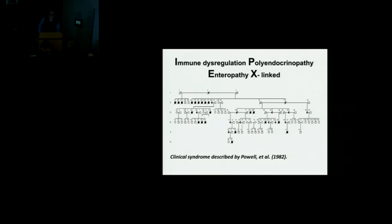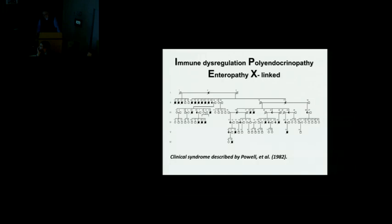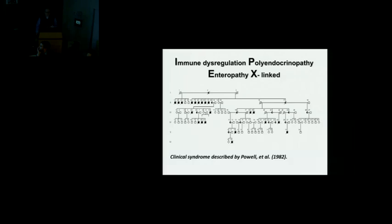The paradigm disease for immune dysregulation disorders is IPEX syndrome — the disease my lab studies. It was first described clinically in a 1982 publication by Powell — a very large family that we've continued to follow, with a few more affected boys added since. The disorder had early-onset bowel disease — autoimmune enteropathy — many patients had early-onset autoimmune endocrinopathy such as type 1 diabetes or thyroid disease, and many had dermatitis, usually eczema.